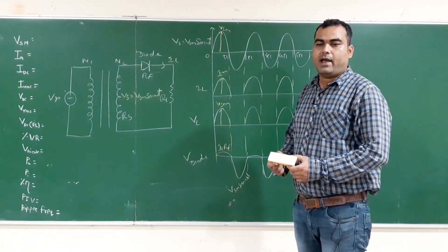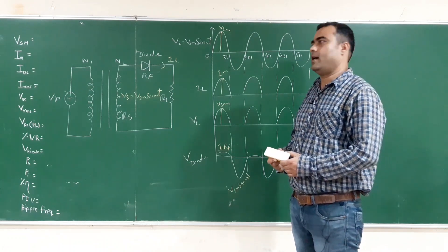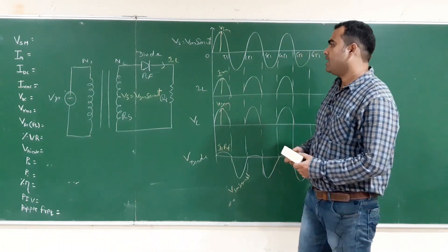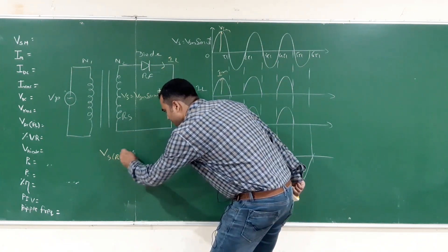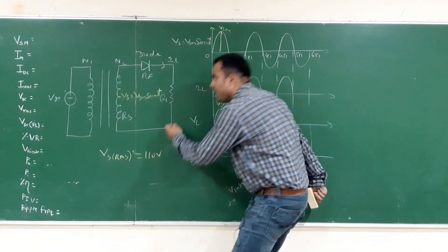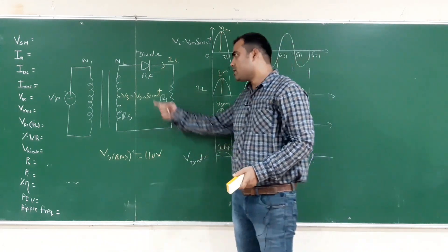To solve this numerical, let us see what are the given data. The given data is VsRMS equals to 110 volt, which is used to supply power.